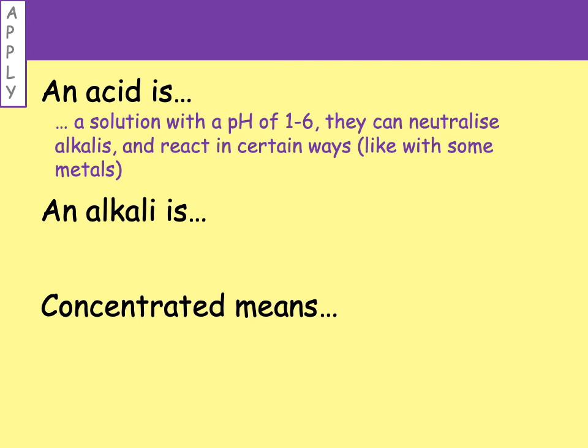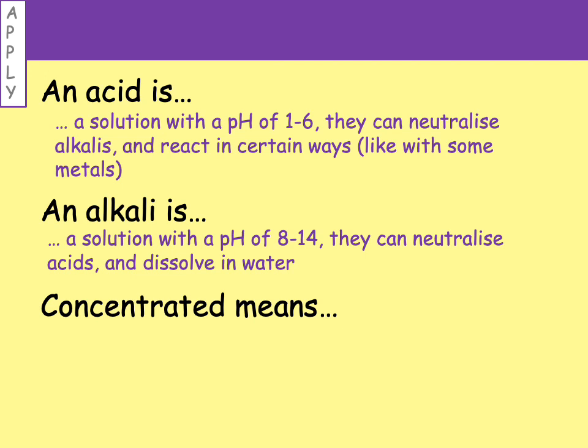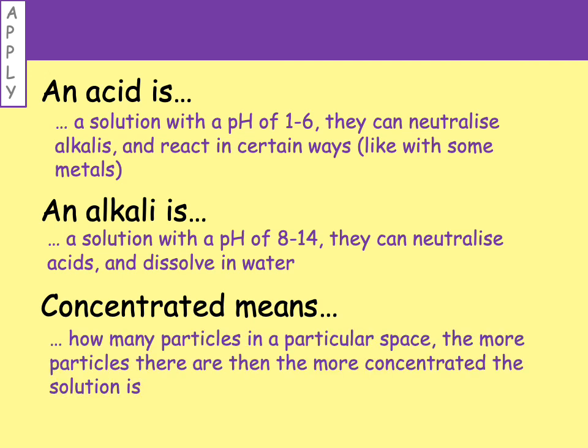We've come back to that word neutralise — that's what happens when an acid and an alkali react together and make water. An alkali is a solution with a pH of 8 to 14. Alkalis can neutralise acid — they react with acids to make water, and alkalis dissolve in water. Finally, concentrated means how many particles are in a particular space. The more particles there are, the more concentrated the solution is. Well done if you got all three — pause the video to make a note of them, as that will be really useful for your next few lessons and for the quiz that comes after this.